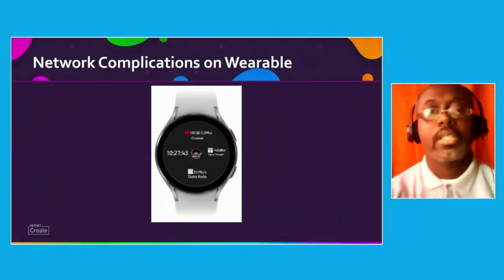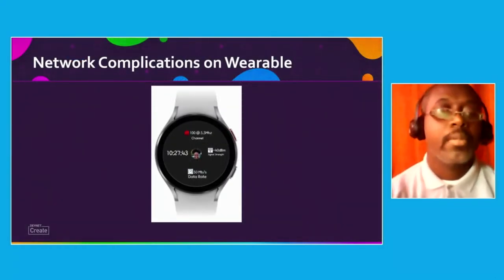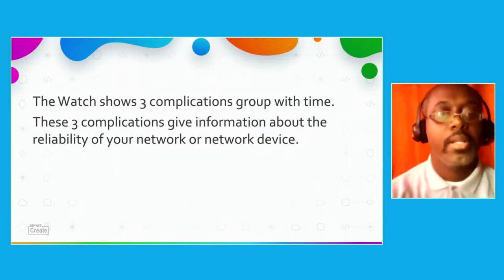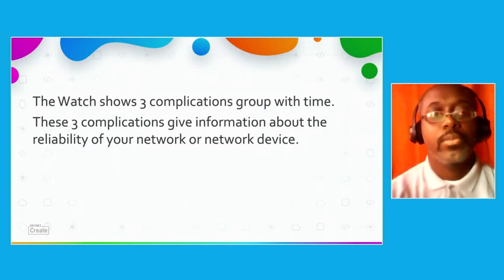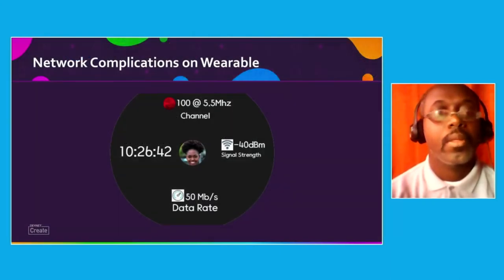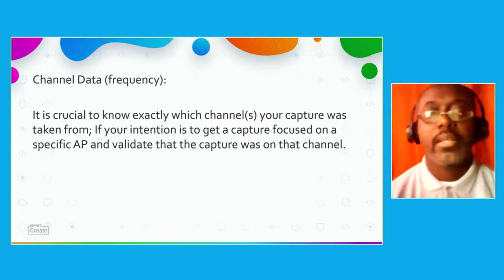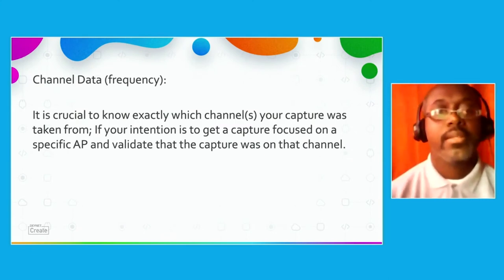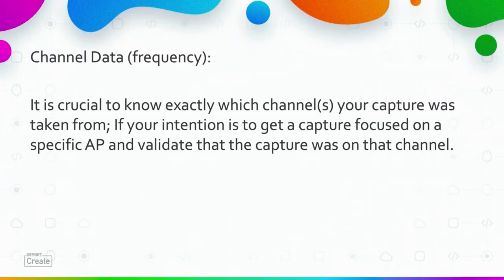The watch shows three complications grouped with time. These three complications give information about the reliability of your network or network device, as shown here in this example of a watch face. Channel data — it is crucial to know exactly which channels your captures are taken from, if your intention is to get a capture focused on a specific access point and validate that the capture was on that channel.